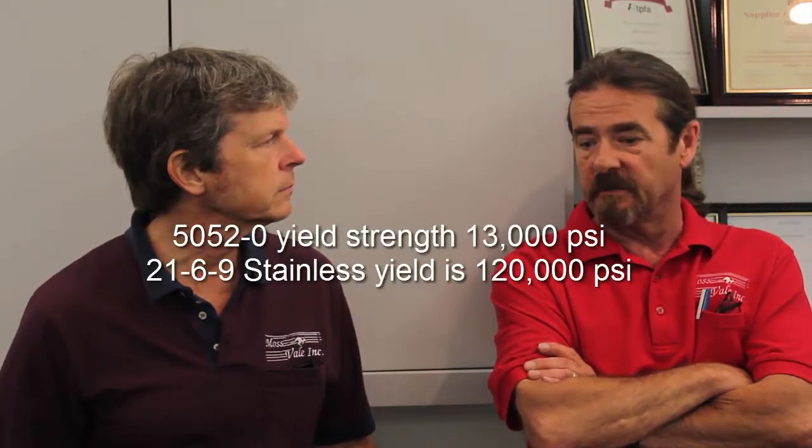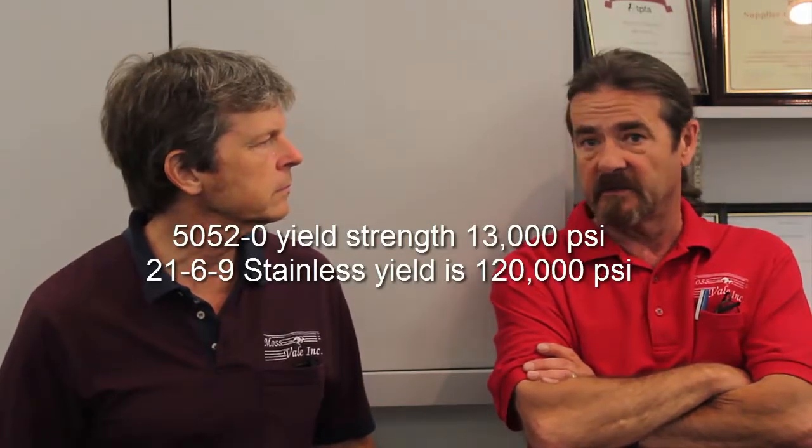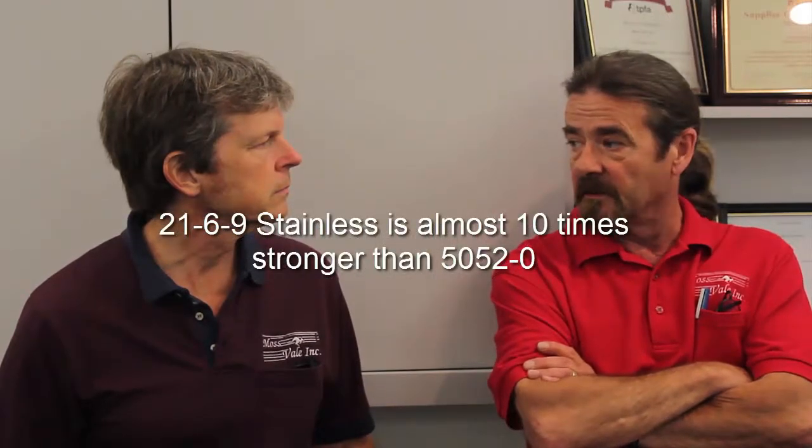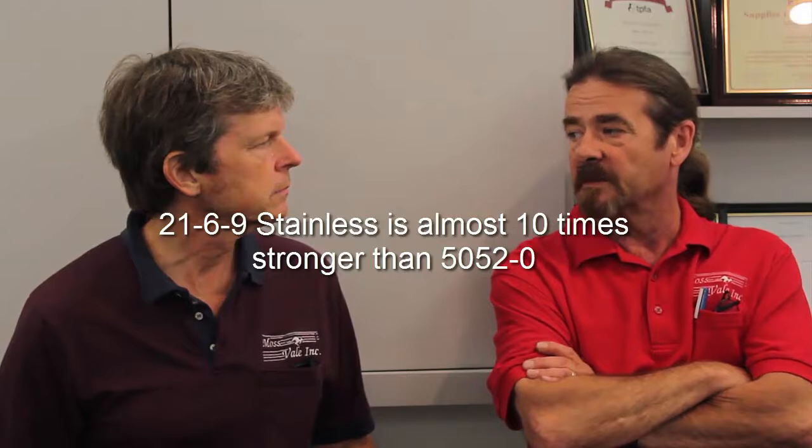So what happens is if you take a piece of, say, 50-52-0 aluminum and try to use it in a pressure system that operates at 3,000 PSI, the chances of failing become greater with the 50-52-0. You want to use the proper material that has the proper yield strength and the proper burst pressure strength that will handle whatever the system allows and then some.